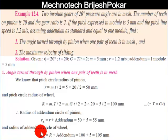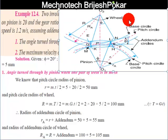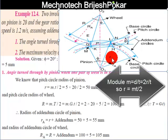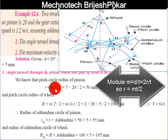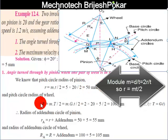First, small r is the pitch circle radius of the pinion. Using the relation: module = d/t = 2r/t, we get 2r = m × t, so r = (m × t) / 2 = (5 × 20) / 2 = 50 mm. So small r equals 50 mm.